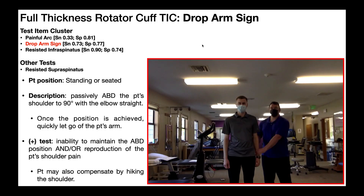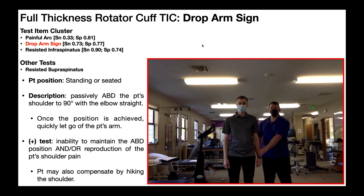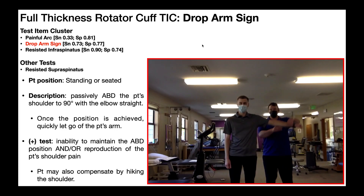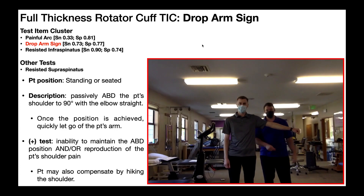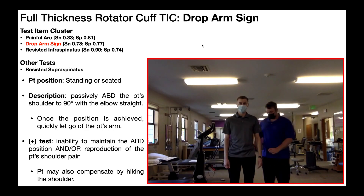Now let's look at a positive test. In a positive test, the patient is either not going to be able to maintain that position, or there will be reproduction of familiar shoulder pain. Here — passively abduct to 90 degrees, elbow straight, I let go — and you can see there's a little bit of lag. He is not able to maintain that position. This would be a positive drop arm sign, and most likely it would also be associated with pain.